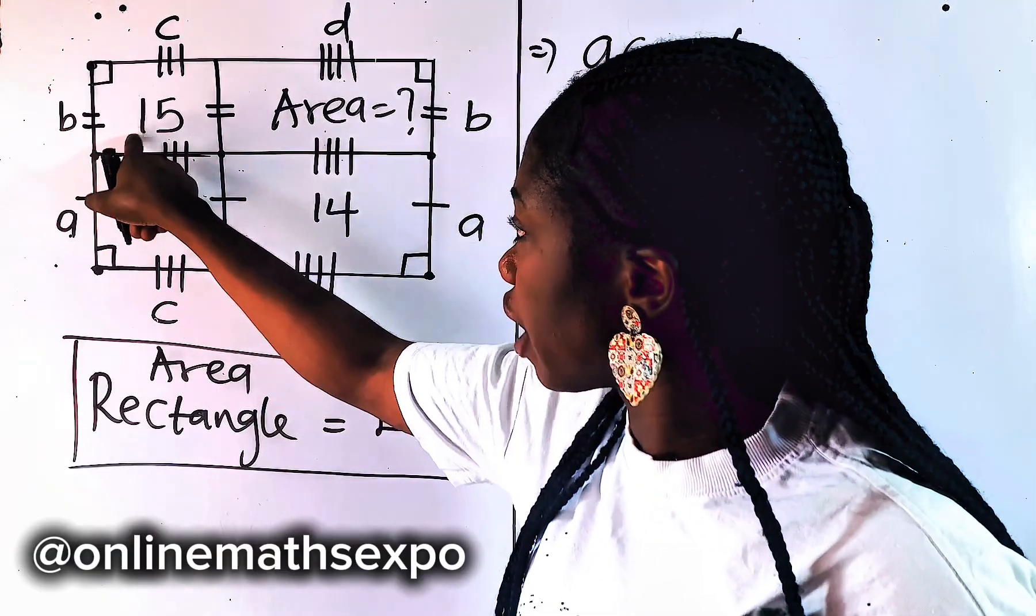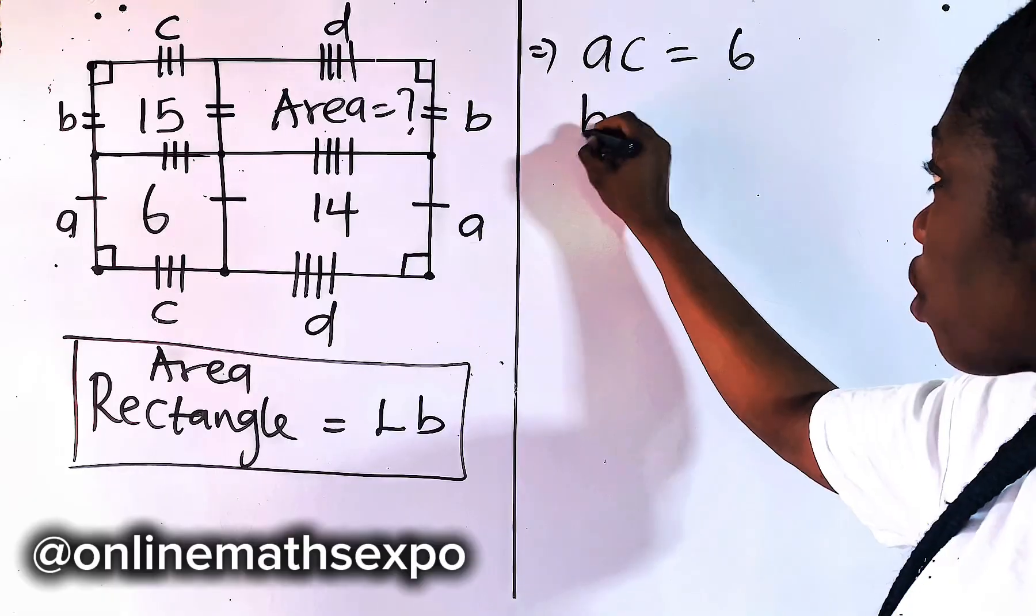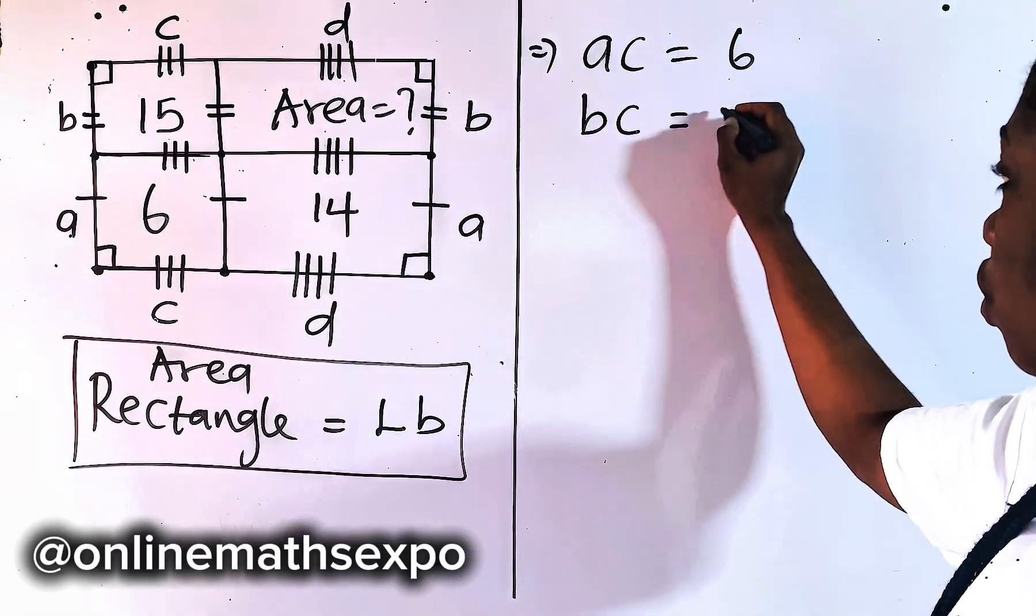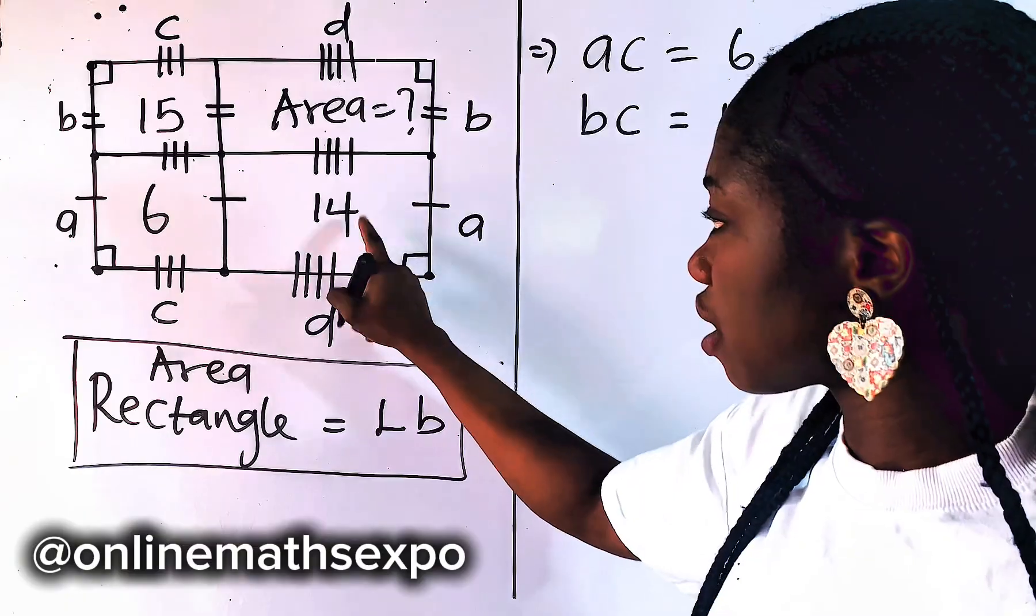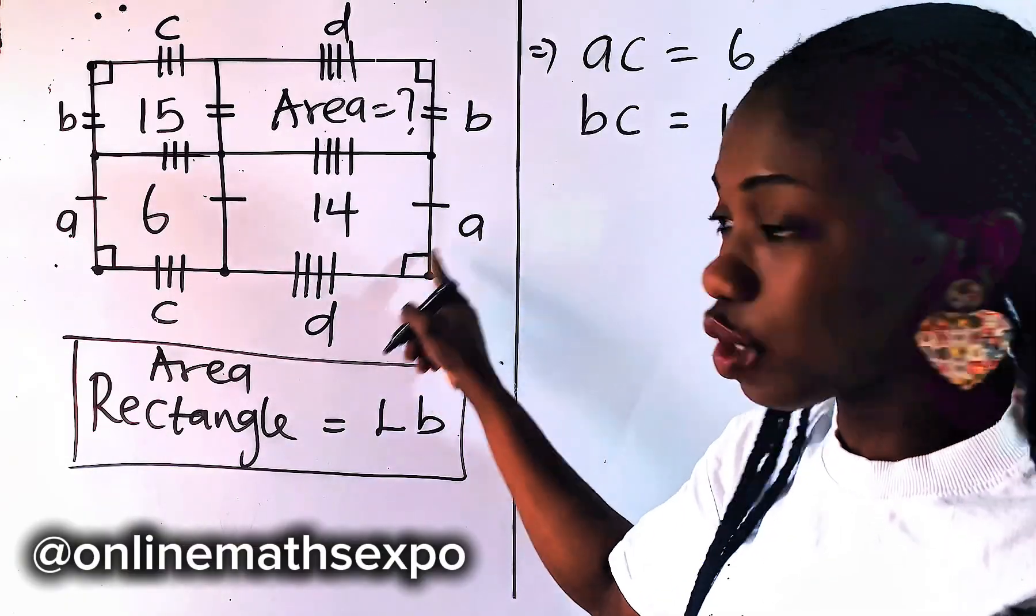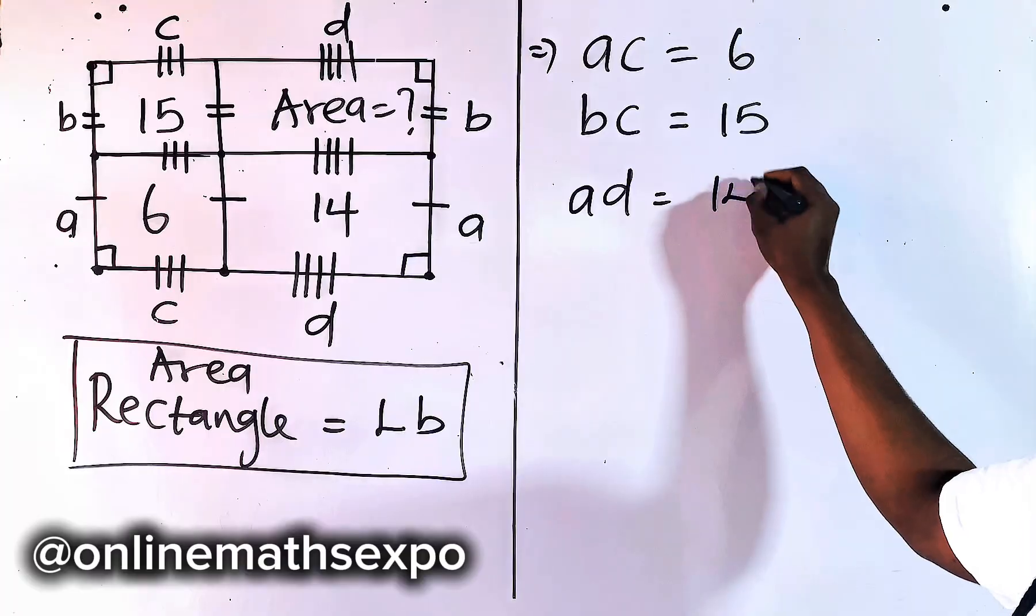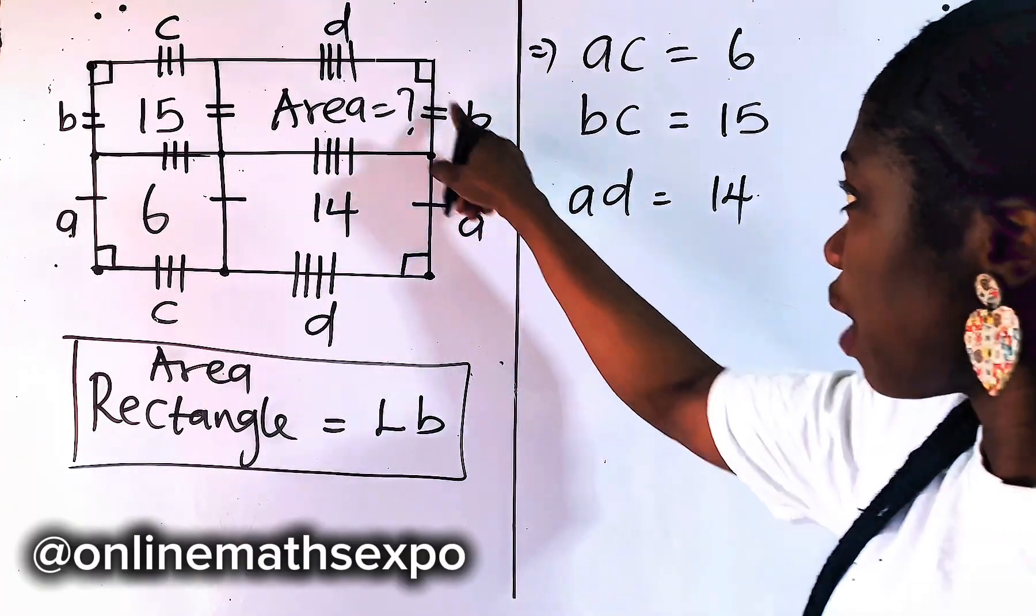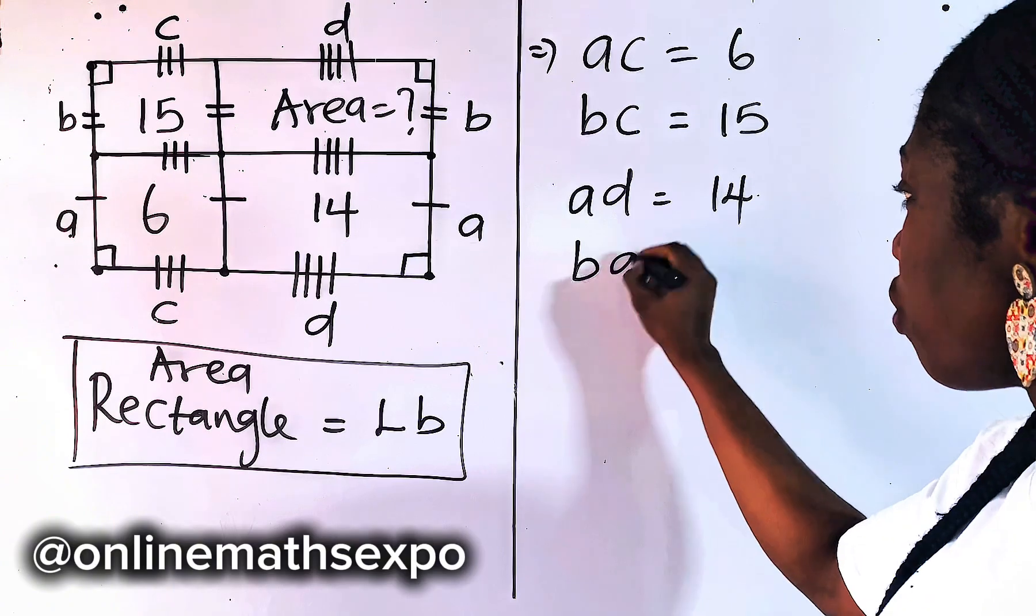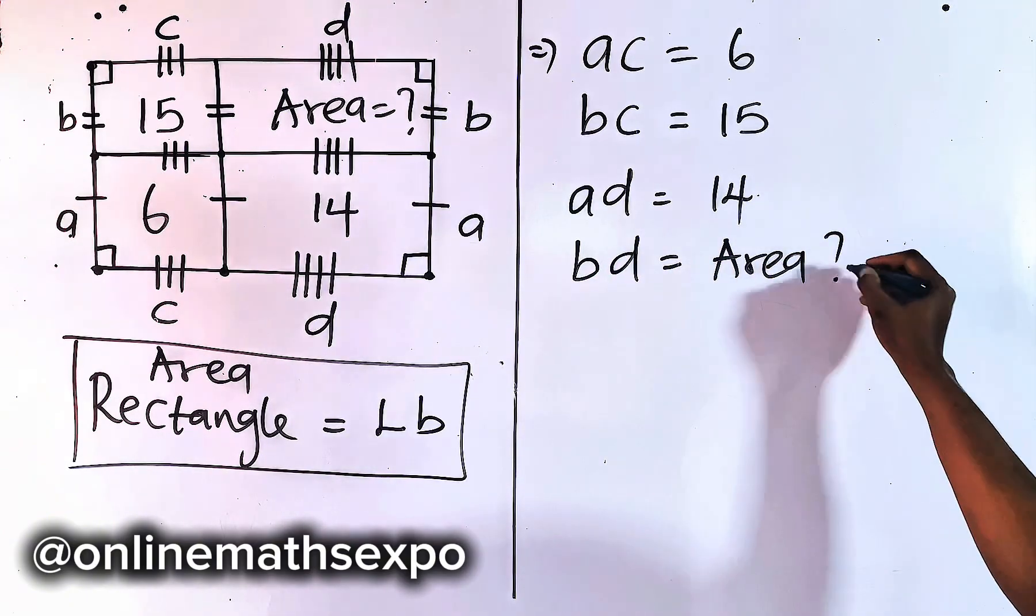Then the second is to get this area, multiply these two sides. So it's going to give us BC should be equal to 15. Then here we now have, to get this area, it means we should multiply these two. And that gives us AD is equal to 14. And finally, to get this, we multiply B and D. And when you multiply it, it gives you the area we are looking for.